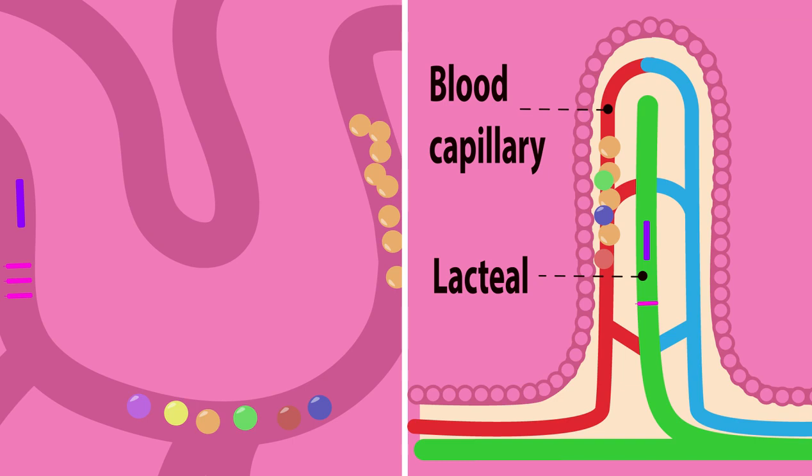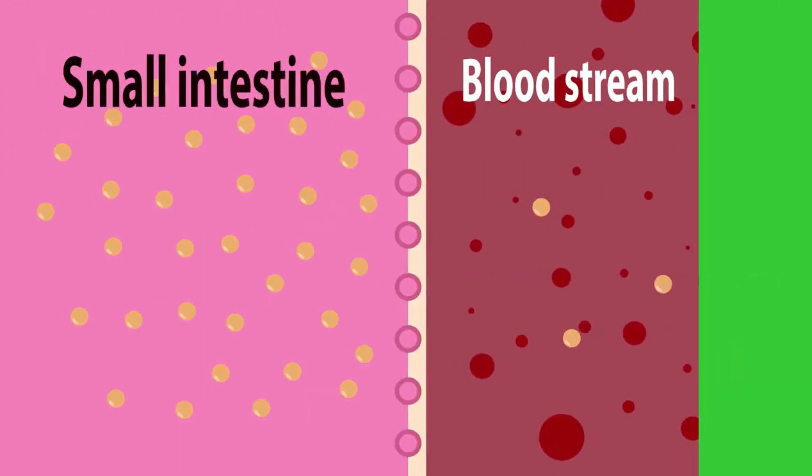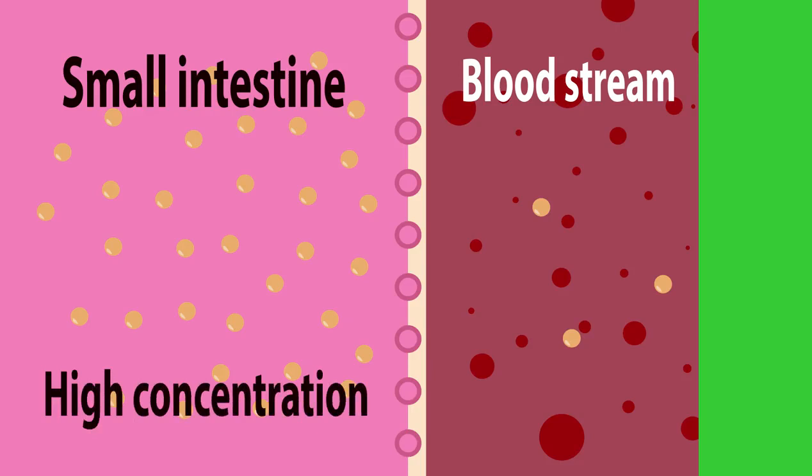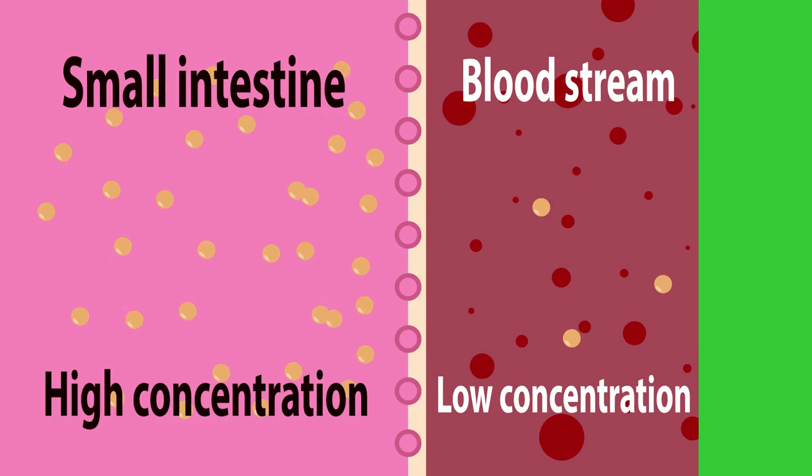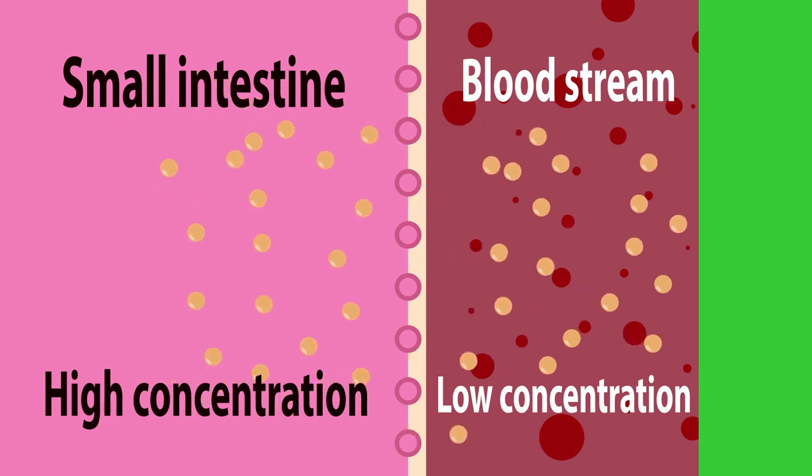These small molecules move by diffusion, moving from a high to a low concentration. For example, the small intestine has a high concentration of sugar molecules, whereas the blood supplying the small intestine has a low concentration of sugar. So the sugar moves down its concentration gradient from a high concentration in the small intestine through the holes in the villi into the blood capillary where it's in low concentration.